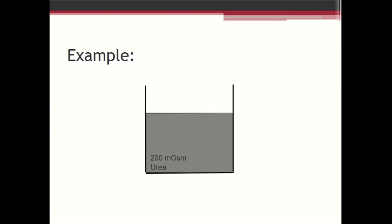Now consider a solution containing 200 milliosmoles of urea. Since urea is a freely permeable particle, it does not contribute towards effective osmolarity. To simplify, whenever we have urea, we consider its effective osmolarity as zero. So the water moves from the solution — which has an effective osmolarity of zero — into the cell, resulting in swelling of the cell.